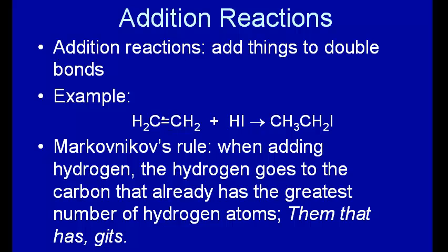An example we talked about in class is if you have a double bond here and you have two things here like HI, the H will go to one side of the double bond and the I will go to the other side, and here we have CH3CH2I.